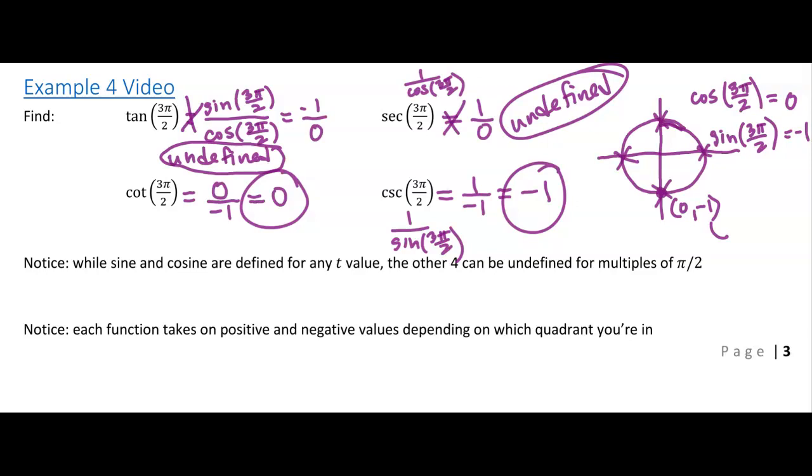I do want to be really clear, though, that sine and cosine are always defined. If you give me a real number arc length, it will always associate with a point on the unit circle. So it will always have an x coordinate and a y coordinate. So sine and cosine are defined everywhere. The others are all defined as fractions, ratios of the two, ratios involving the two.